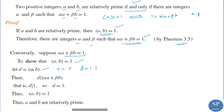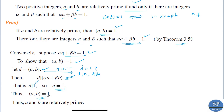Since d equals GCD(a, b), we have d divides a and d divides b. Therefore d divides alpha·a plus beta·b. Since alpha·a plus beta·b equals 1, we have d divides 1. Since d is a positive integer that divides 1, that means d equals 1. Therefore d equals 1 means GCD(a, b) equals 1, so a and b are relatively prime.